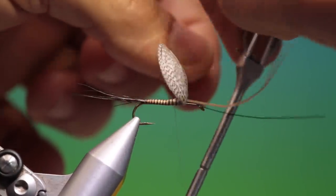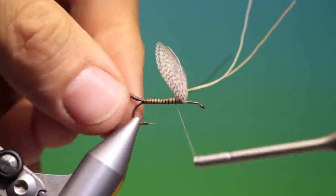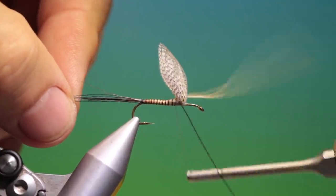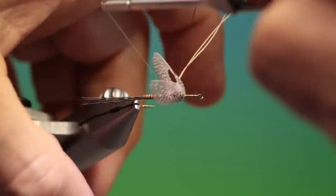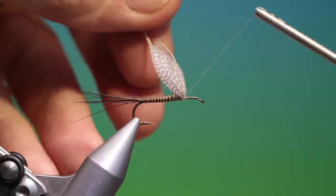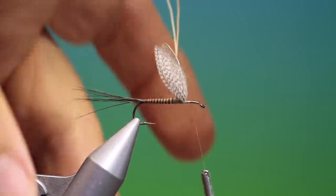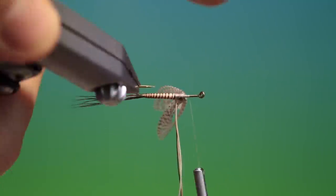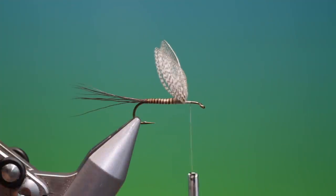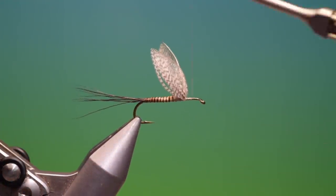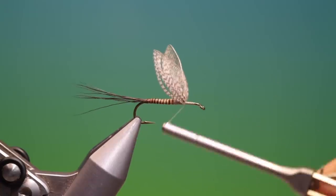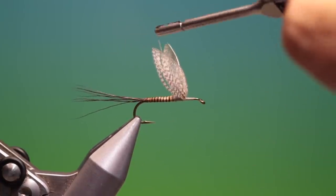I can tie those off now. Like so. Move our tying thread forward, just to lock it off. And then I can remove those. Okay. I just want a little foundation at the front there of tying thread. I go ways back and then on the back of the wings.